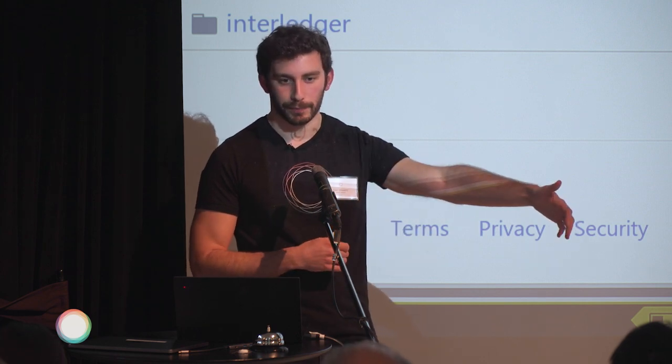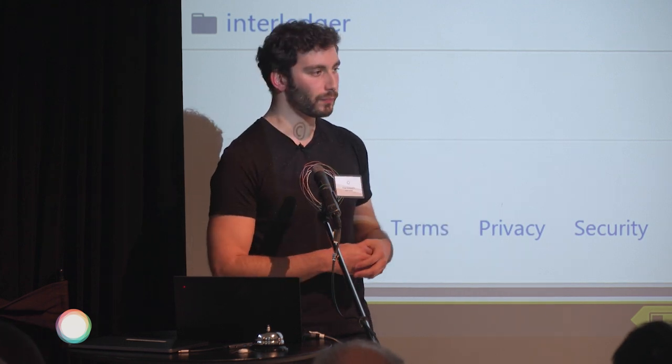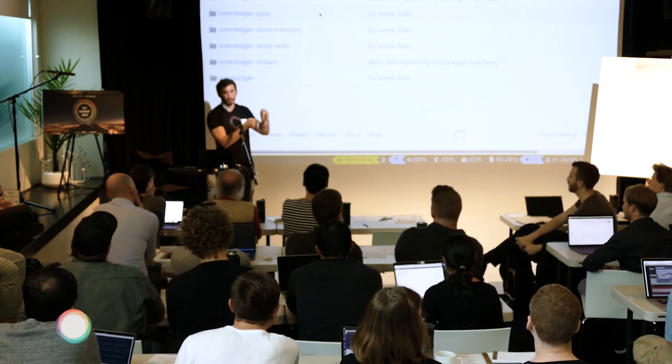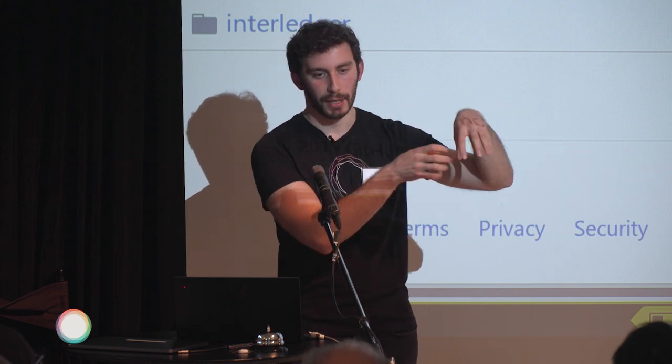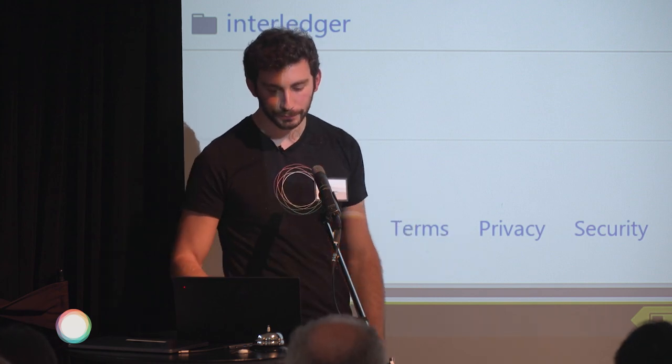An account in this framing is a relationship with one other party, with parameters like how you talk to them, the credit limit, and settlement details. The sender has an account representing the connector, the connector has an account representing the sender, and the connector has another account representing the next connector. This is the core thing for describing who we're interacting with.